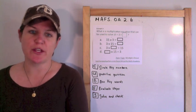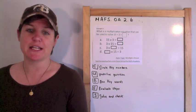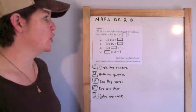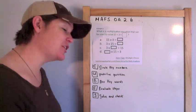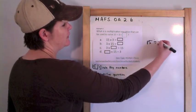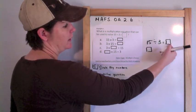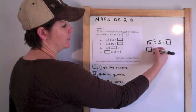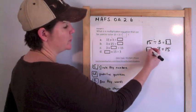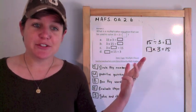What is a multiplication equation that can be used to solve 15 divided by 3 equals the unknown? Multiplication and division are inverse operations. So if we have 15 divided by 3 equals box, the inverse would be: box times 3 equals 15, or the unknown times 3 equals 15. What goes in the box? 3, 6, 9, 12, 15.